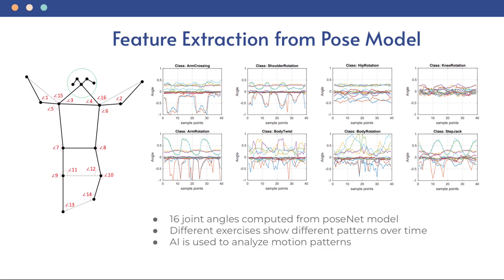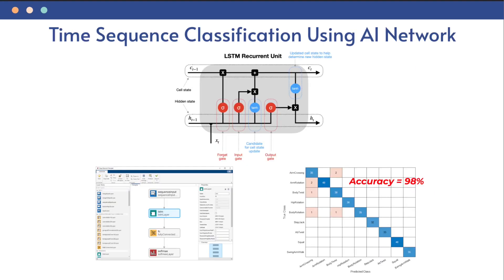The time sequence for the angle measurements during rehab exercises have different patterns, which can be analyzed by using AI. The AI algorithm we selected is called Long Short-Term Memory Neural Network. We use MATLAB to design and train the AI evaluation model.